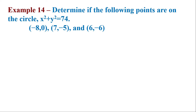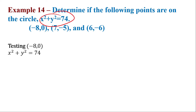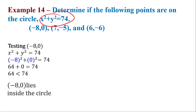Determine if the following points are on the circle x squared plus y squared equals 74. We're going to test each point to determine its location. If we test negative 8 comma 0, substitute it into the equation: 8 squared plus 0 squared gives 64, and 64 is less than 74. Therefore, this point lies inside the circle.